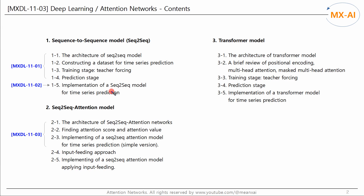In the last video, we implemented a sequence-to-sequence model to predict time series. In this video, we are going to add a feature called attention to our sequence-to-sequence model. Let's look at the architecture of the seq2seq attention model, how to find attention scores and attention values, and implement this model with Keras to predict a time series.